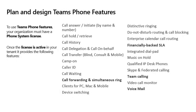Plan and design Teams phone features. To use Teams phone features, your organization must have a Teams phone system license. Once the license is active in the tenant, it will provide features like call answering, call hold, call history, call delegation, call on behalf of, call transfer, call waiting, call park, call forward, and simultaneous ring. Features are added by Microsoft regularly, as the solution is continually being improved upon and evolved.